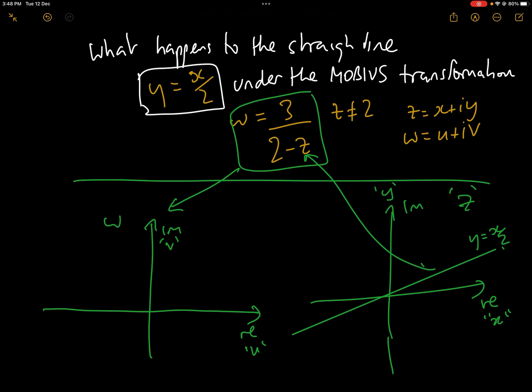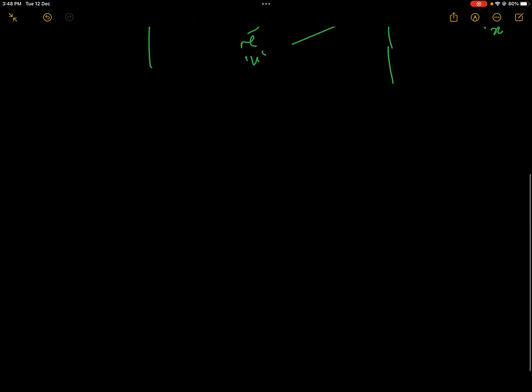The first thing we're going to do is make z the subject of the equation, then look specifically at the line y equals x over 2 and see what comes out in terms of u and v, and then we can draw that on the w-plane.